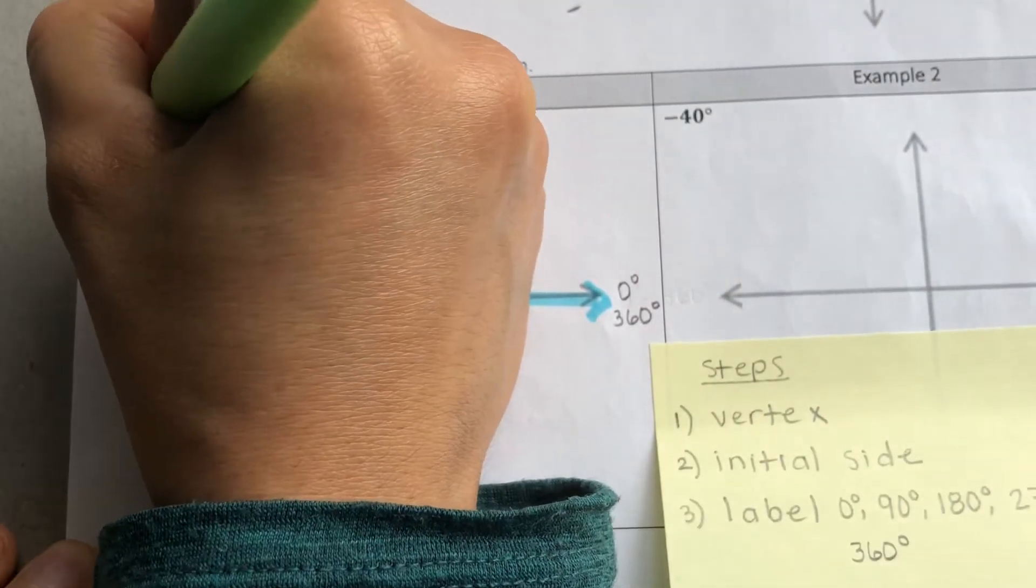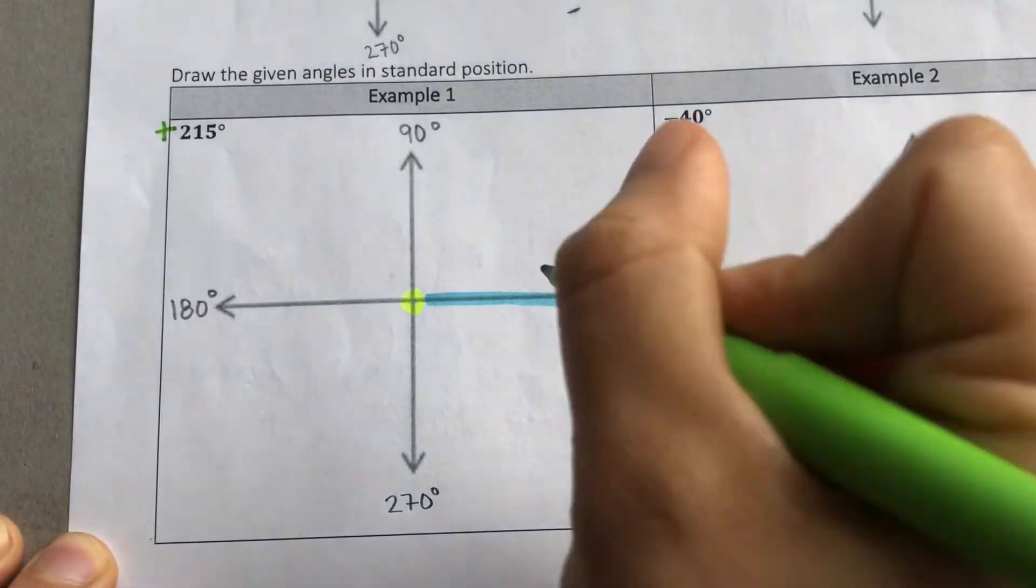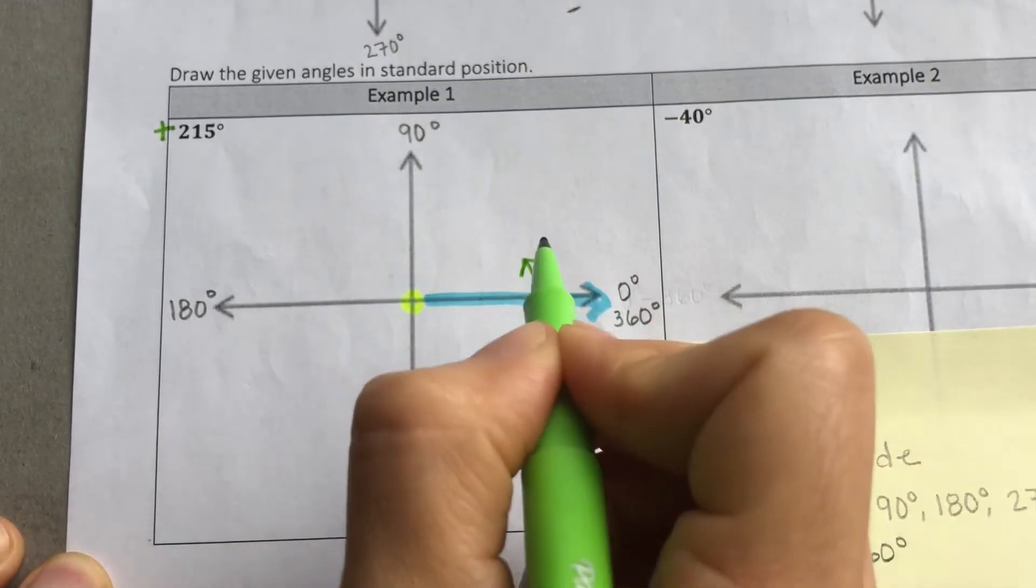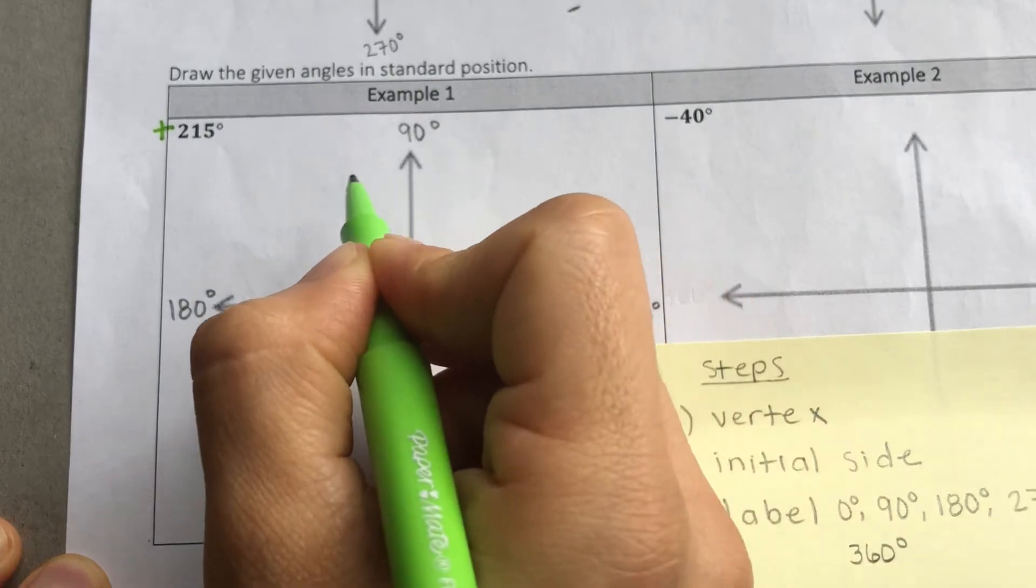In this case, this is a positive number. Therefore, we know we have to start rotating upwards toward the left counterclockwise.